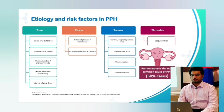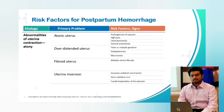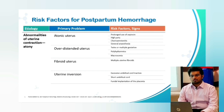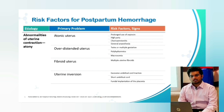The risk factors for postpartum hemorrhage: for atony, the primary problems include atonic uterus, over-distension of the uterus, fibroid uterus, or uterine inversion. Risk factors for atony include prolonged use of oxytocin, high parity, chorioamnionitis, or general anesthesia. Over-distension can be due to twins or multiple gestation, polyhydramnios, or macrosomia. Fibroid uterus involves multiple fibroids, mainly submucous or intramural. Uterine inversion can result from an excessively long umbilical cord or early traction of the cord.